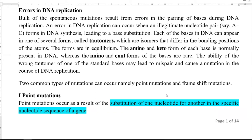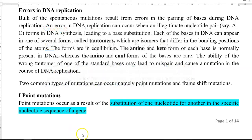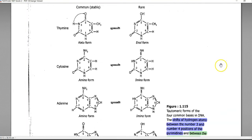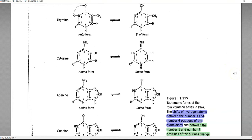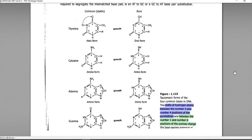Each of the bases in DNA can appear in one of several forms referred to as tautomers, which are isomers that differ in the bonding positions of atoms. In this image, you can see the different kinds of nucleotides: adenine, guanine, thymine, and cytosine. What is shown on the left-hand side are the common stable forms that occur in living organisms, called the amino form or keto forms.